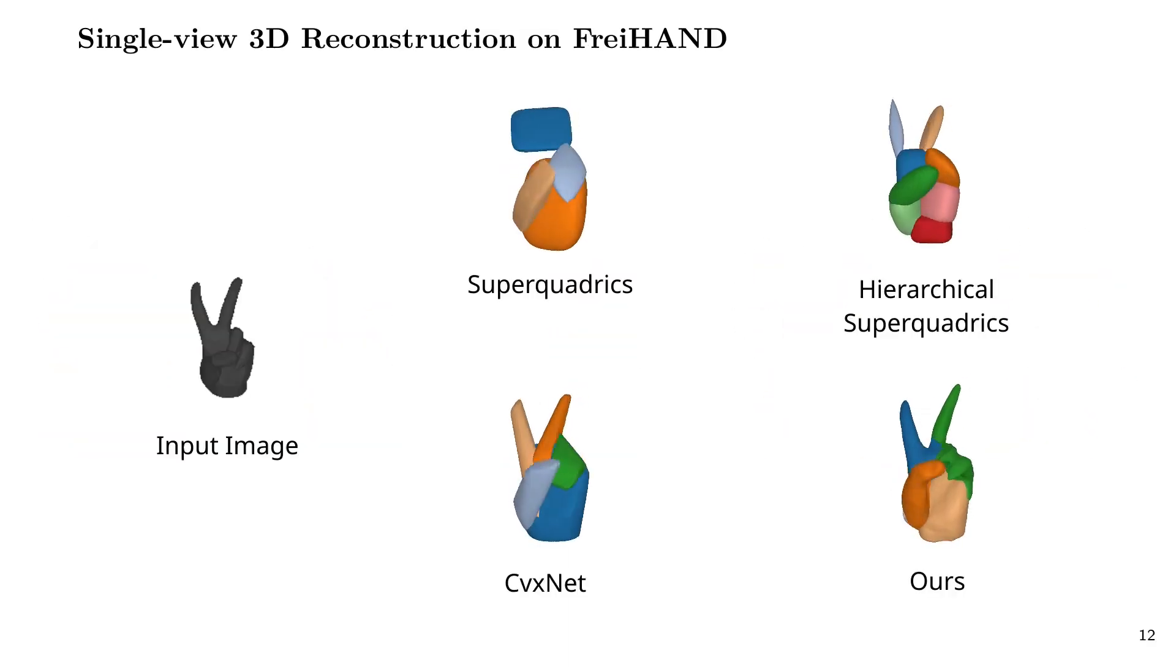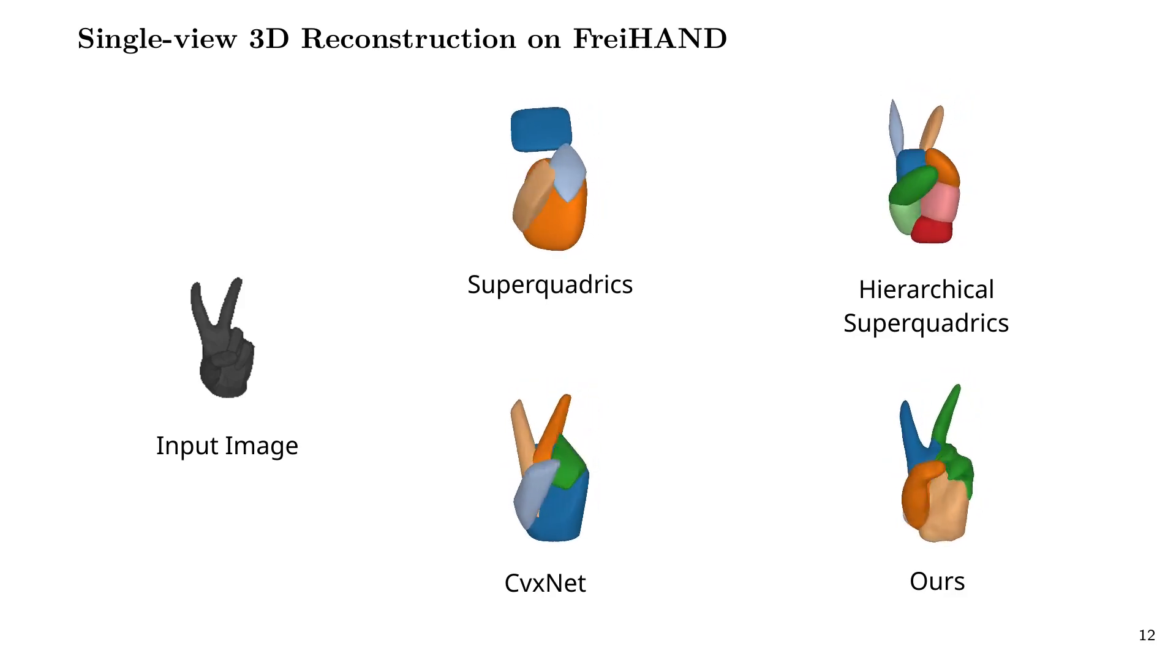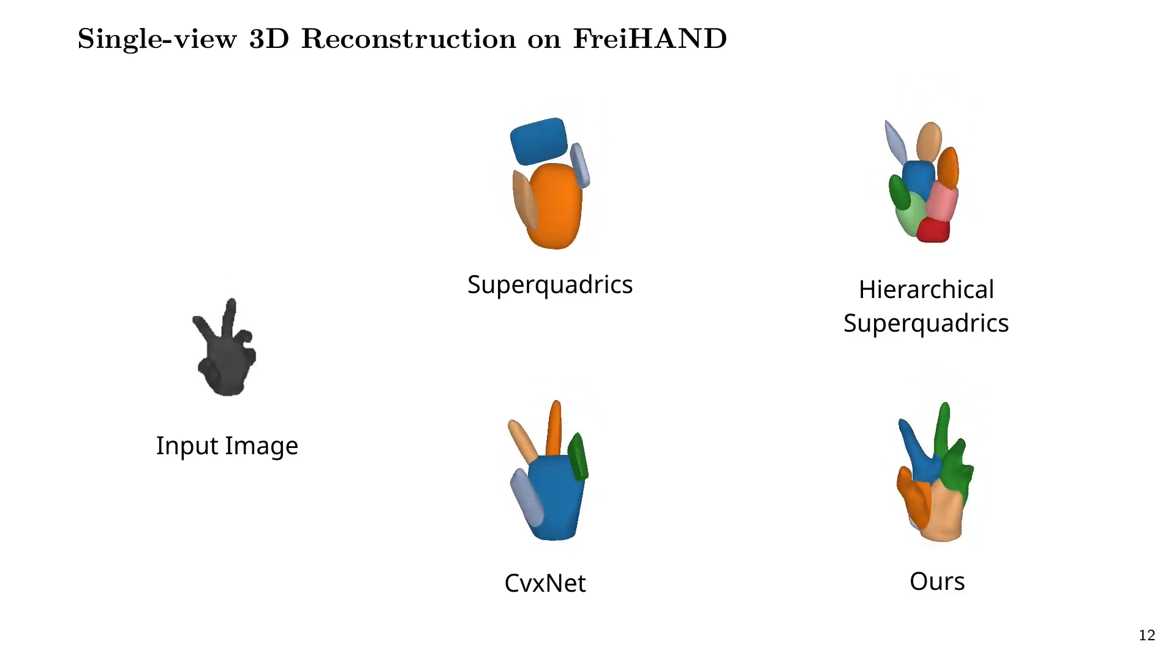We further evaluate our model on FreiHAND and observe that it faithfully captures fine details of organic shapes such as bent fingers using a single primitive, while prior work focuses primarily on the structure of the predicted shape and misses out fine details.